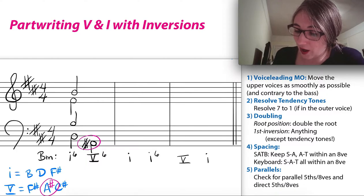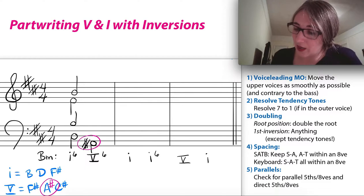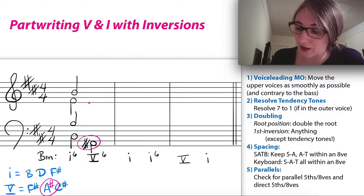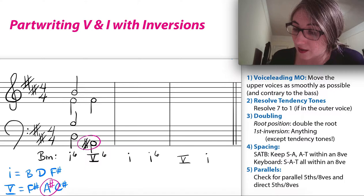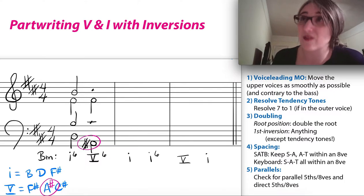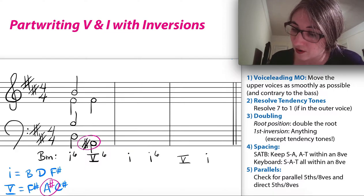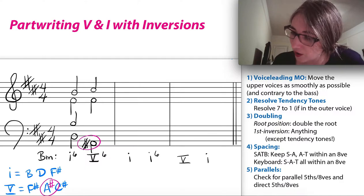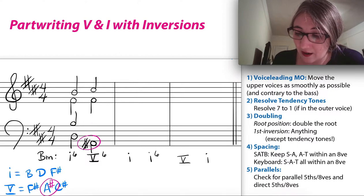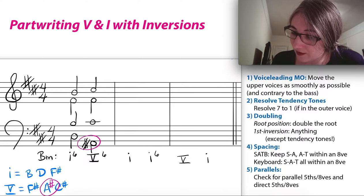The goal is to move every voice as smoothly as possible. For F: putting it in the soprano would be a leap, the alto already has F (common tone — leave it), the tenor would be a leap. So the smoothest place for F is to keep it in the alto. Now I need C♯: I could put it in the soprano (stepwise motion) or the tenor (also stepwise), so either works. I'll put it in the soprano. For doubling, I can double F♯ or C♯ — doubling C♯ is just a step, whereas doubling F would be a large leap, so I'll go with C♯.